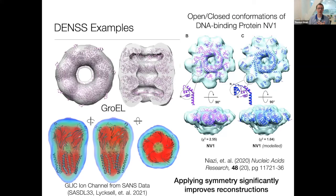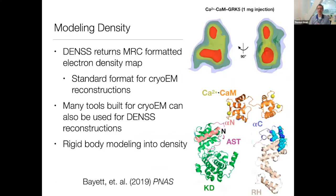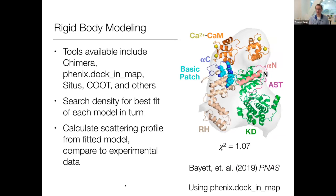Here are some examples of DENSS results: GroEL with symmetry imposed, a DNA binding protein where small hinge motions were visible, and SANS data — one advantage of DENSS is that you don't need to worry about form factors. You can see the gaps between domains in the density. One of the nice things about generating density is that CryoEM tools — flexible fitting, rigid body modeling — can be used directly with the MRC-formatted electron density map output in programs like Phenix or Coot.